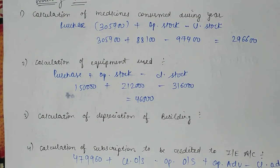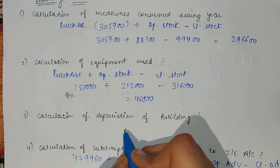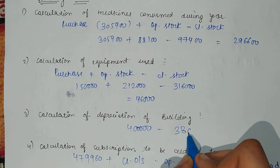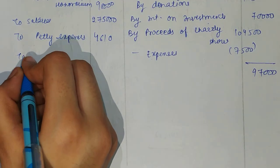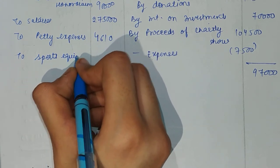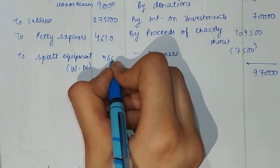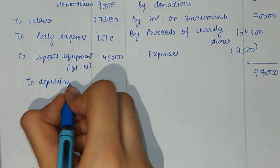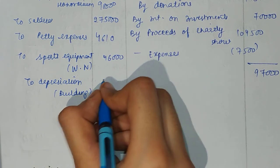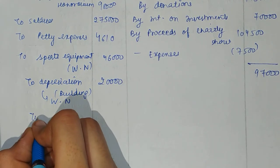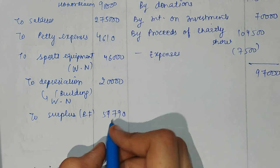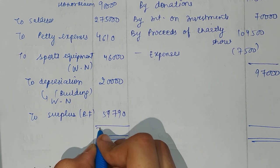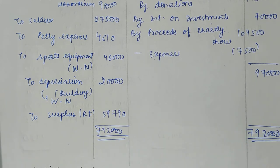The last working note is depreciation on building. For depreciation, no rate is given — but you can calculate it yourself. The starting value of the building was $400,000. Now it is $380,000. So the depreciation is $20,000 — that is the name of this balancing figure. Now we have calculated everything from the working notes. After including equipment consumed of $46,000 and depreciation on building of $20,000, the balancing figure is a surplus of $59,790. The total of the income and expenditure account is $792,000 on both sides.